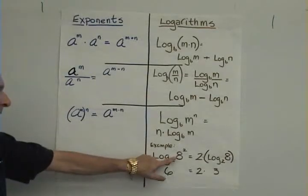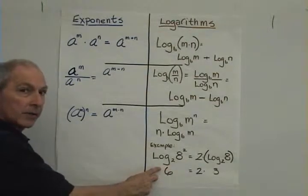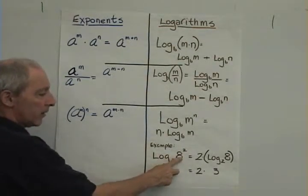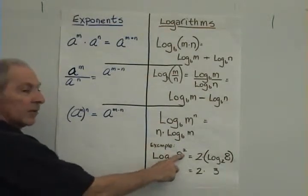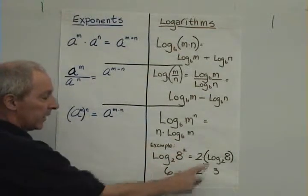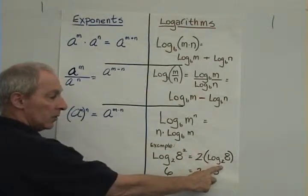The example here is fairly straightforward, and it's meant to show you that the two answers are the same. 8 squared is 64. The log base 2 of 8 to the second power is equal to 2 times the log base 2 of 8.